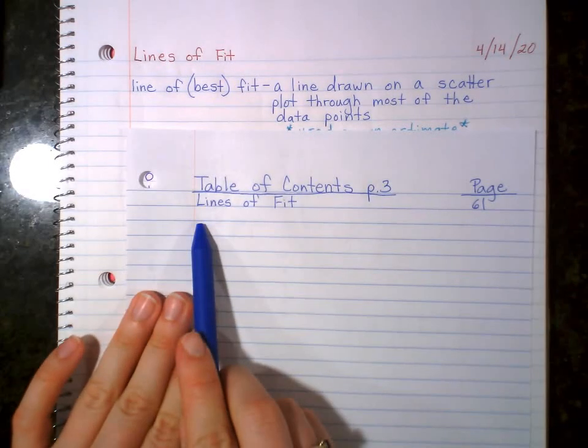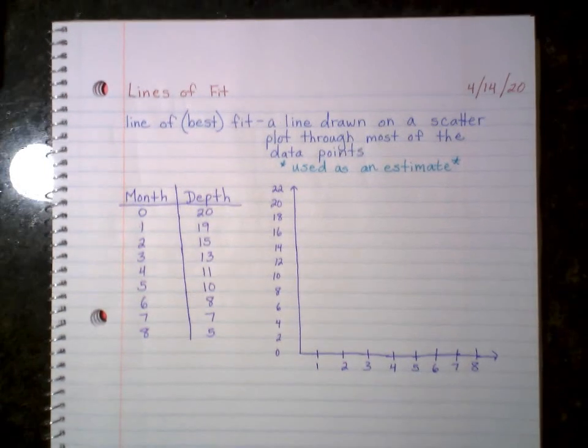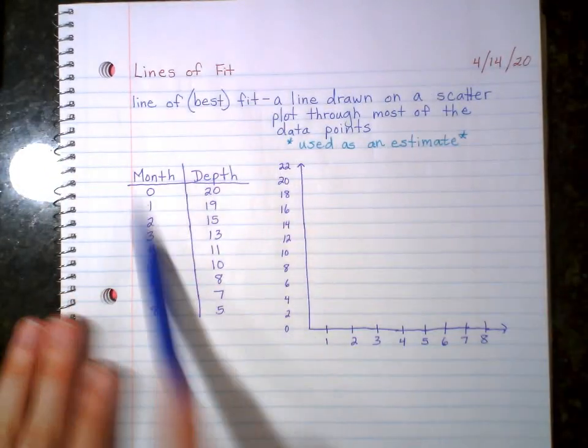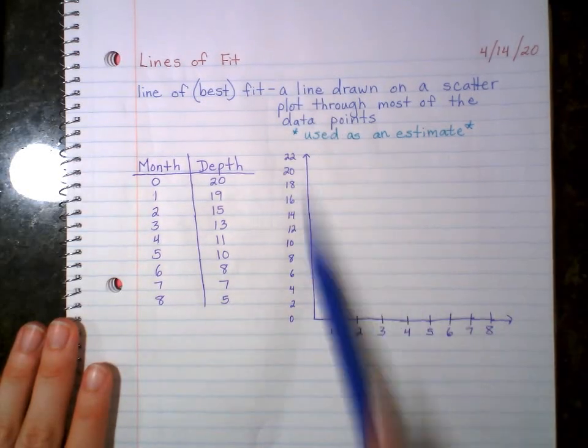Table of contents, lines of fit, page 61, page 61 on the bottom right. Put the date, lines of fit. I know seventh period, I'm off a page for you guys. Do the definition, put the table, start the graph.